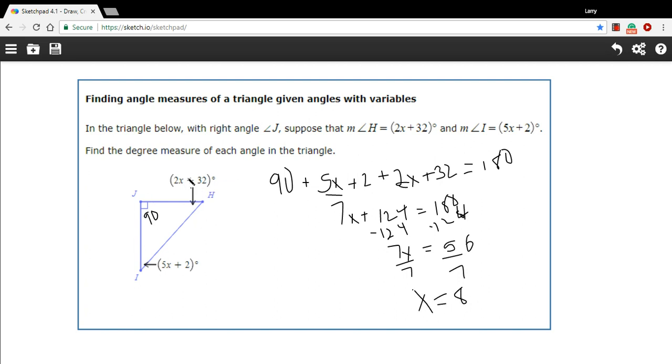Now let's plug them back in. So if we put in 8 here, we'd get 16 plus 32. That would be 48 degrees for h. And we put in 8 for x here. 5 times 8 is 40, plus 2 is 42 degrees.